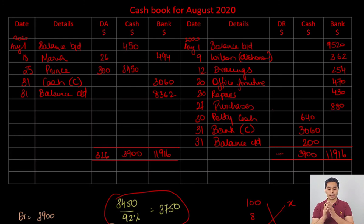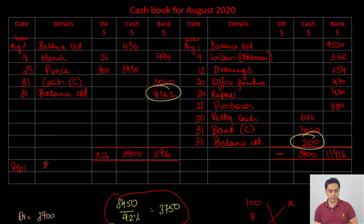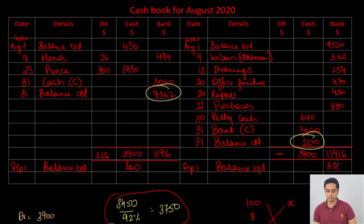Bring down balances into the next month. September 1: balance brought down — cash $200 on the debit side, and balance brought down — bank $8,362 on the credit side, meaning the bank remains in overdraft at the beginning of September.